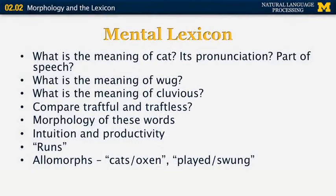There are also special cases of words stored as what is known as allomorphs. For example, 'cats' is a derivative of 'cat,' meaning the plural of singular 'cat.' But there are special cases like 'oxen,' which is formed irregularly as the plural of 'ox.' The past tense of 'play' is 'played,' but the past tense of 'swing' is 'swung,' formed irregularly. Those words have to be stored in the lexicon and may not be obtainable by following a regular morphological derivation.